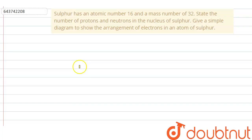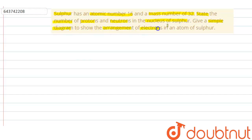Hello everyone, let us solve this question. The question says that sulfur has an atomic number of 16 and a mass number of 32. State the number of protons and neutrons in the nucleus of sulfur, and give a simple diagram to show the arrangement of electrons in an atom of sulfur.